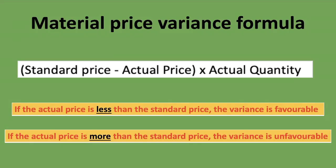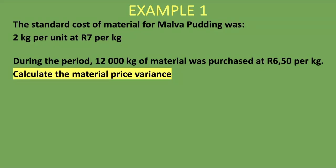Let's take a look at an example. We are asked to calculate the material price variance. The standard cost of material for malva pudding was 2 kg per unit at 7 rand per kg. That is the standard cost — always remember this is the one we are estimating or expecting to pay during the period.